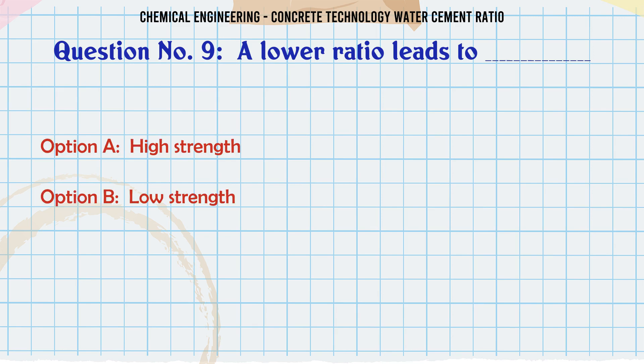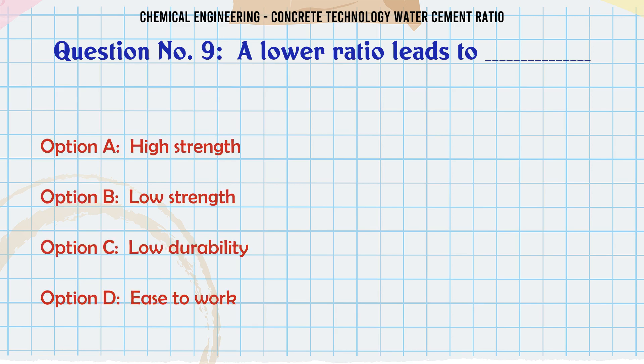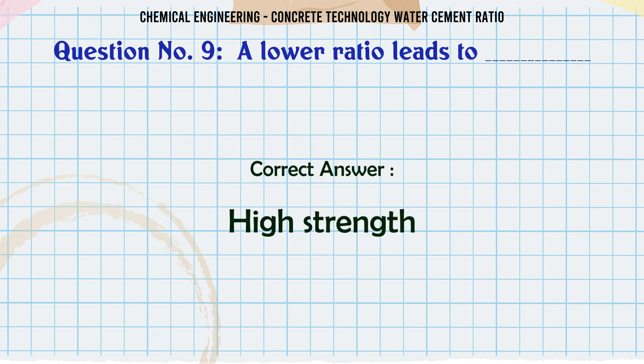A lower W/C ratio leads to: A. High strength, B. Low strength, C. Low durability, D. Ease to work. The correct answer is A. High strength.